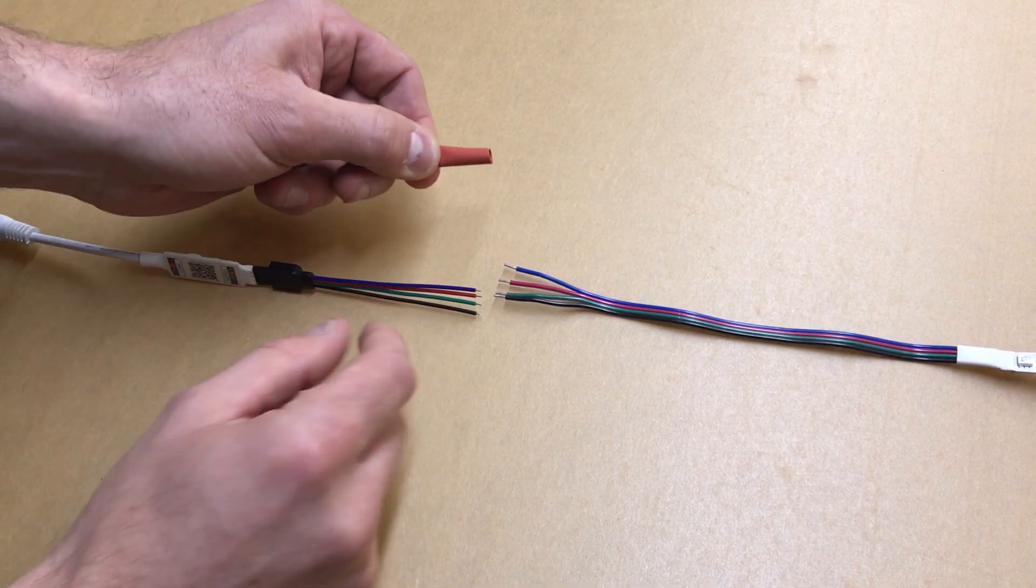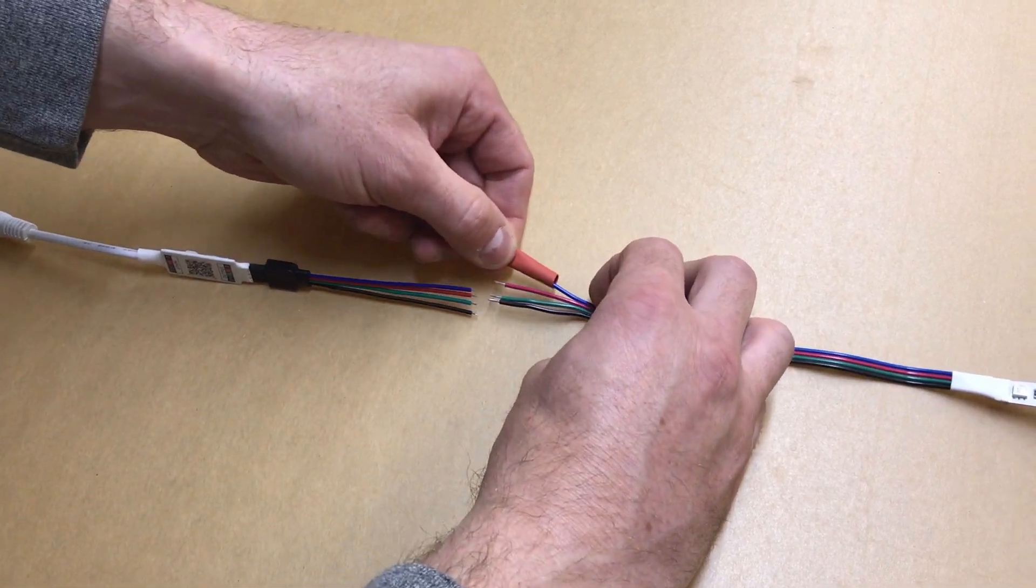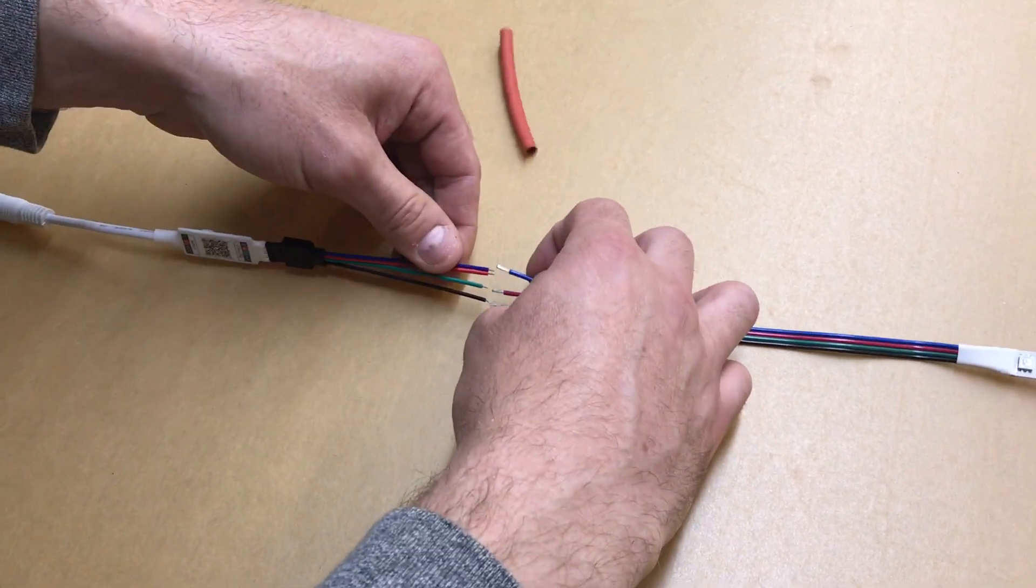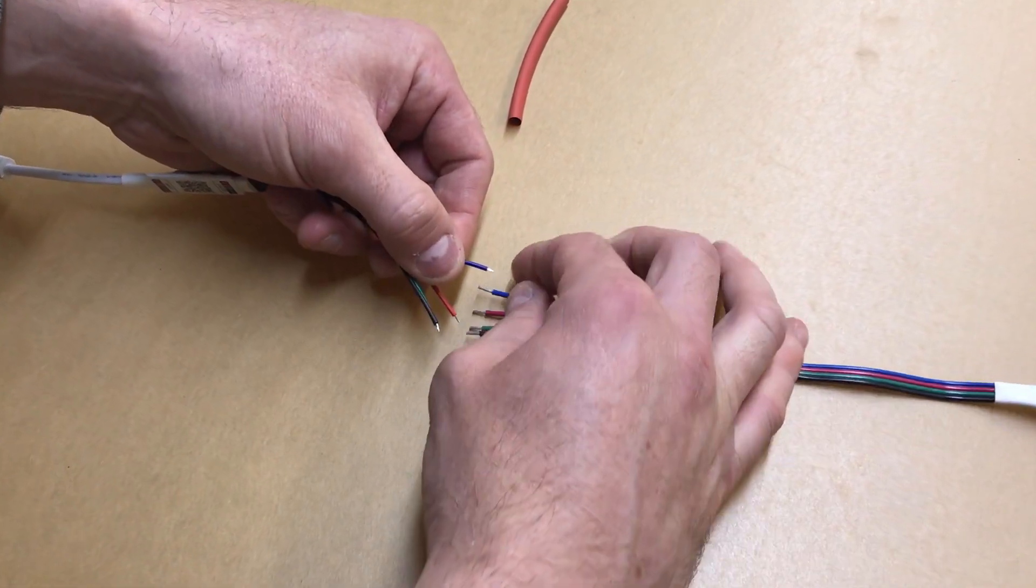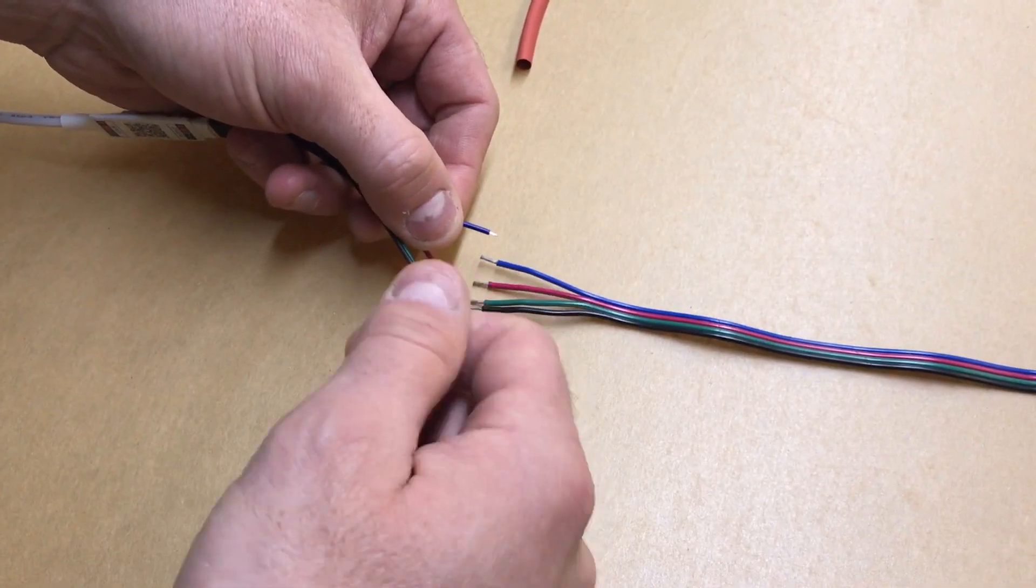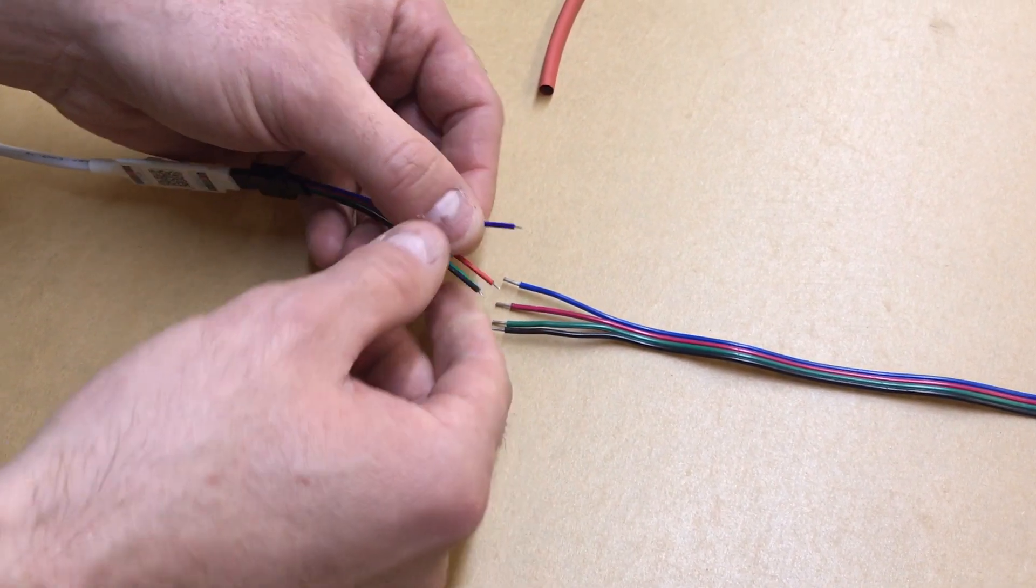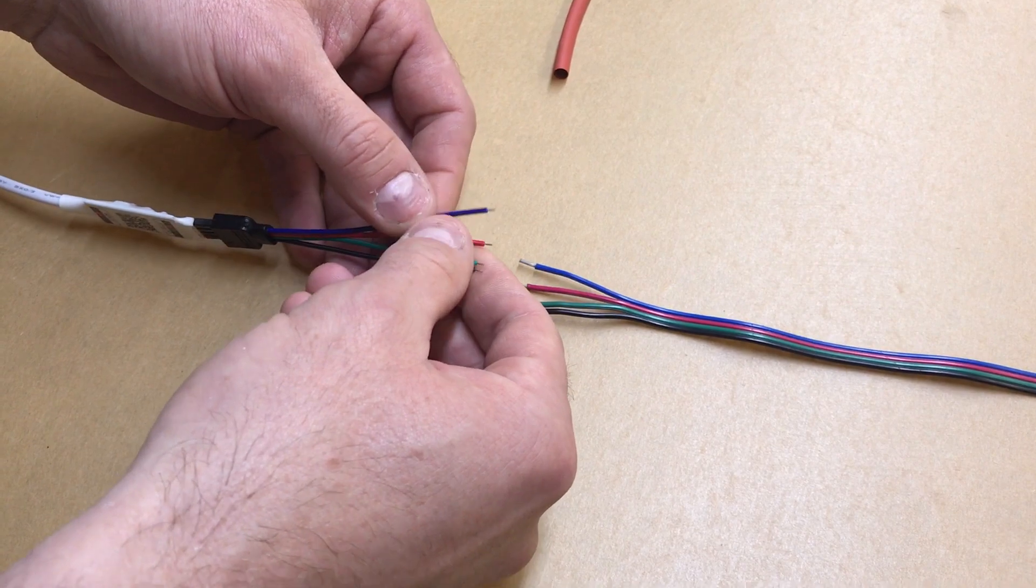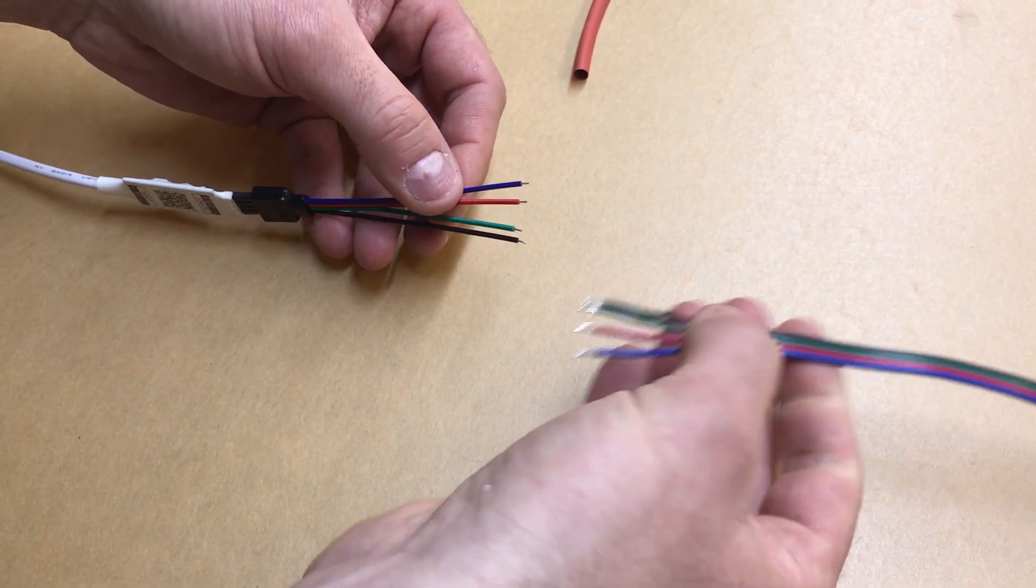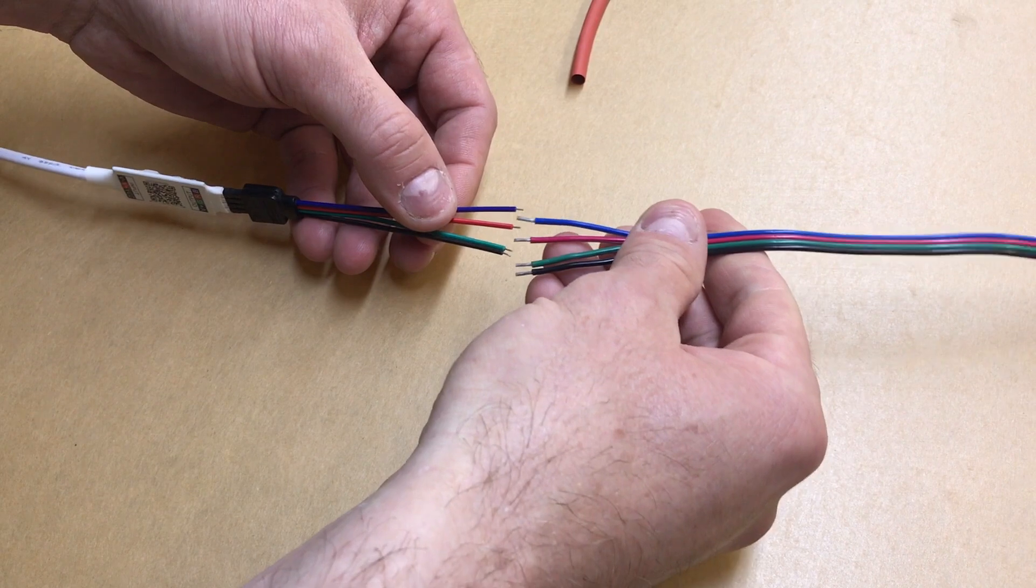You would slip it on, then solder your wire. In this case it would be blue to blue. Then you would slip the shrink tubing over top and shrink it closed to make sure that these wires aren't touching, otherwise you may get some unexpected results.